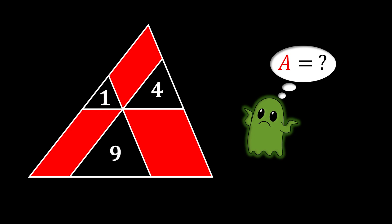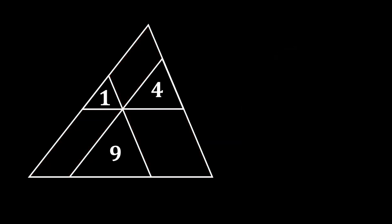All right, so let's solve this one. First, we will start with the fact that all the sides of our inscribed triangles are actually formed as parallel lines to the sides of our big triangle. This means that all inner angles of our inscribed triangles are actually equal to the inner angles of our big triangle, which means that all the triangles in our sketch are similar.